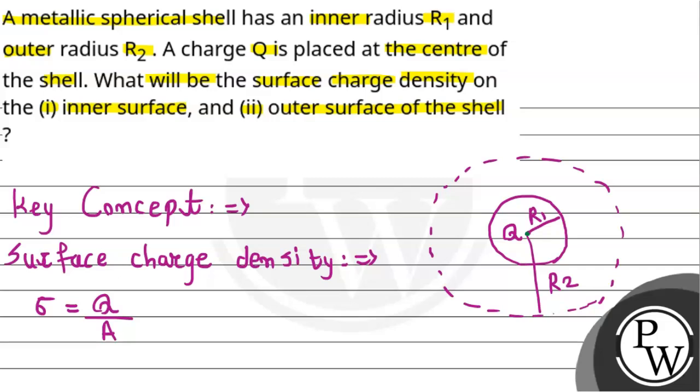Now the charge induced onto the inner surface will be negative, and also the charge onto the outer surface will be induced as positive. So the outer surface will be positively charged induced and the inner surface will be negatively charged induced.